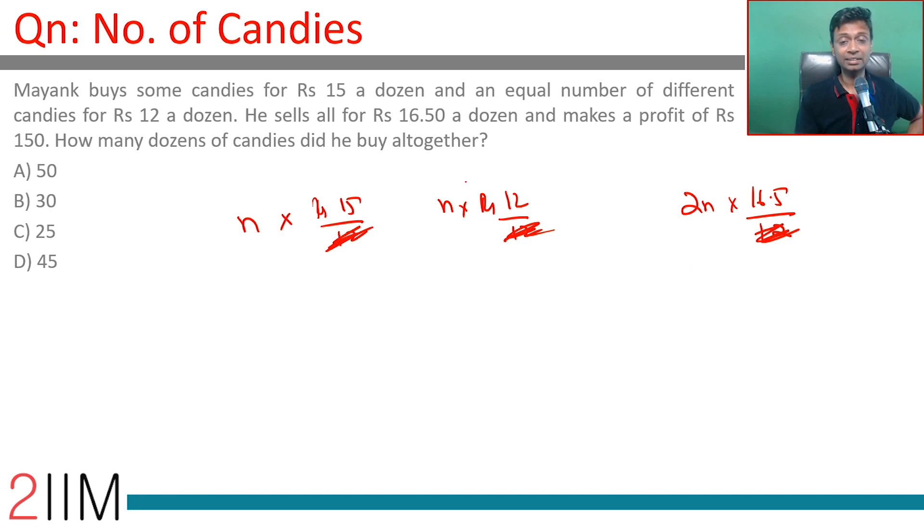So n dozen at 15, n dozen at 12, 2n dozen at 16.5. And so this is 15n plus 12n, which is 27n.